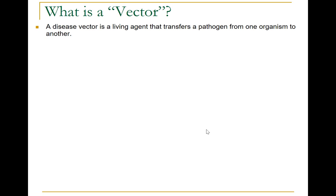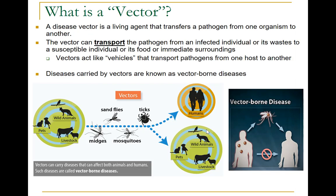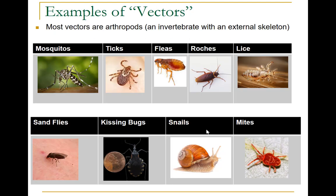A disease vector is a living agent that transfers a pathogen from one organism to another. The vector can transport the pathogen from an infected individual or its waste to a susceptible individual, its food, or its immediate surroundings. Diseases carried by vectors are known as vector-borne diseases. Vectors act like vehicles that transport pathogens from one host to another, as shown in figures where insect vectors connect animals with animals or animals with humans.